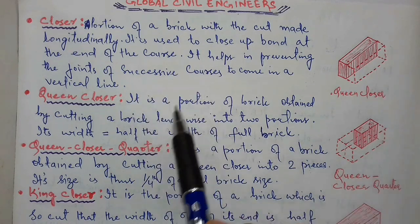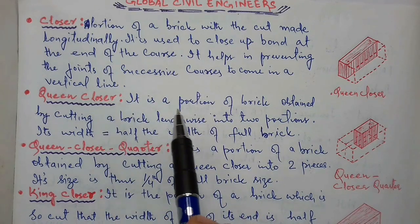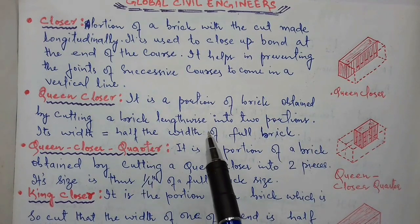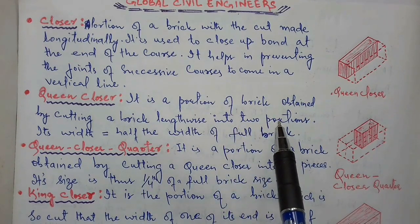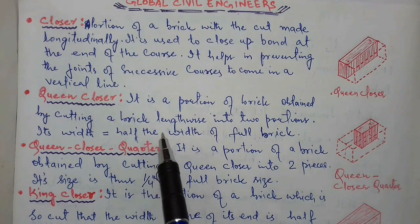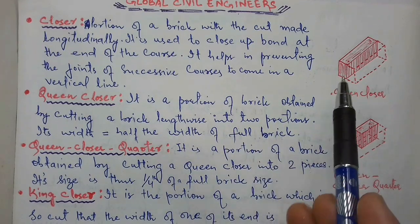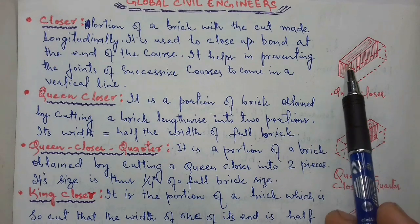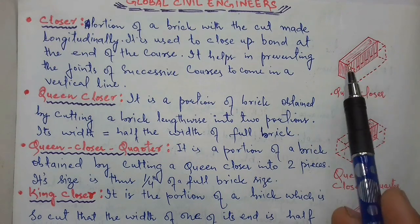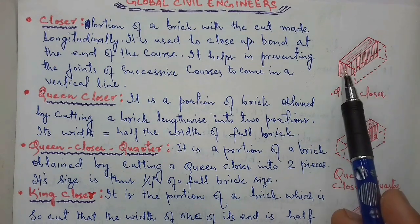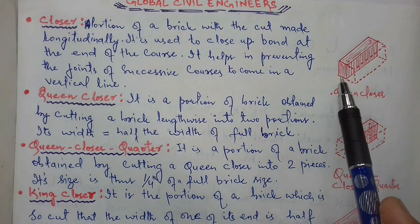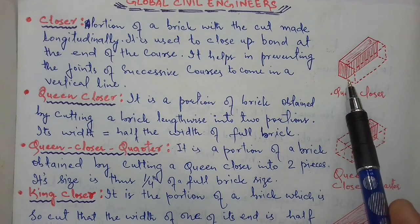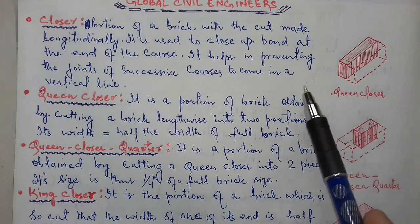Queen closer: it is a portion of a brick obtained by cutting a brick lengthwise into two portions, its width equal to half the width of a full brick. As you can see, if the brick is cut longitudinally such that its width becomes equal to half the width of the full brick, it is known as a queen closer.